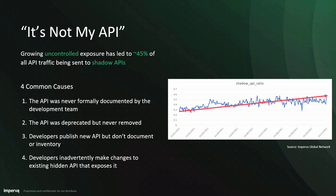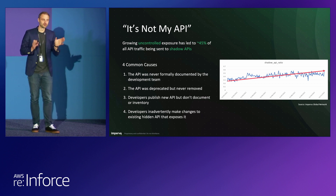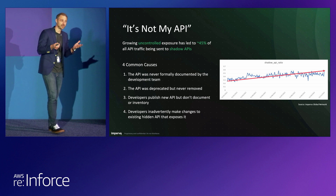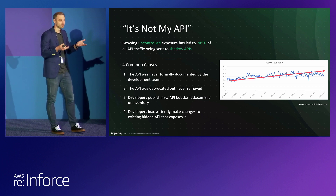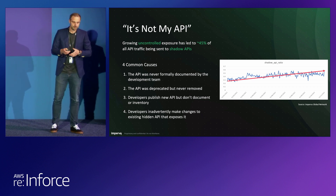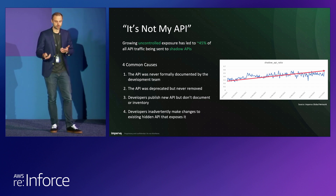Even for API development teams with really robust API documentation who swear it's 100% accurate — in 95% of the scenarios I've talked to developers, that is not the case. There are all sorts of deprecated APIs that they thought were gone, marked as deprecated, but they're actually still being used and still exposed to the internet. And so this is part of the challenge with visibility.